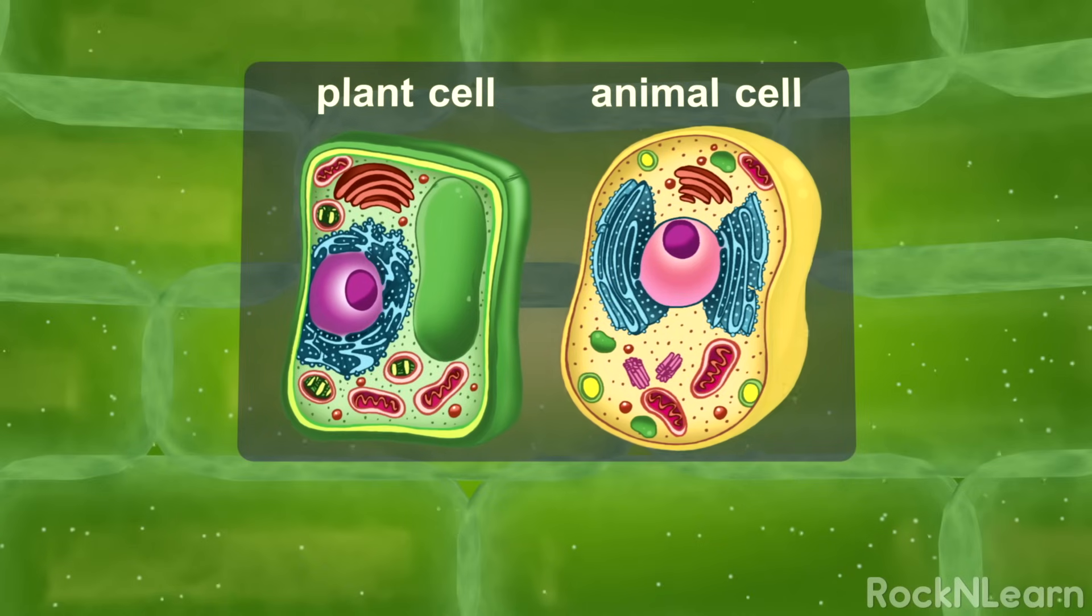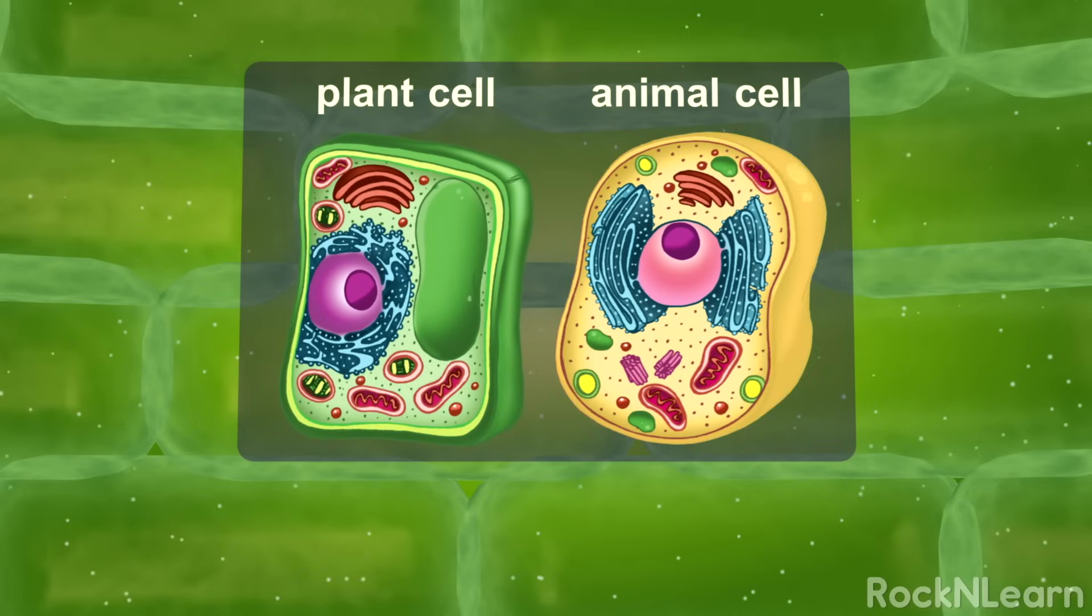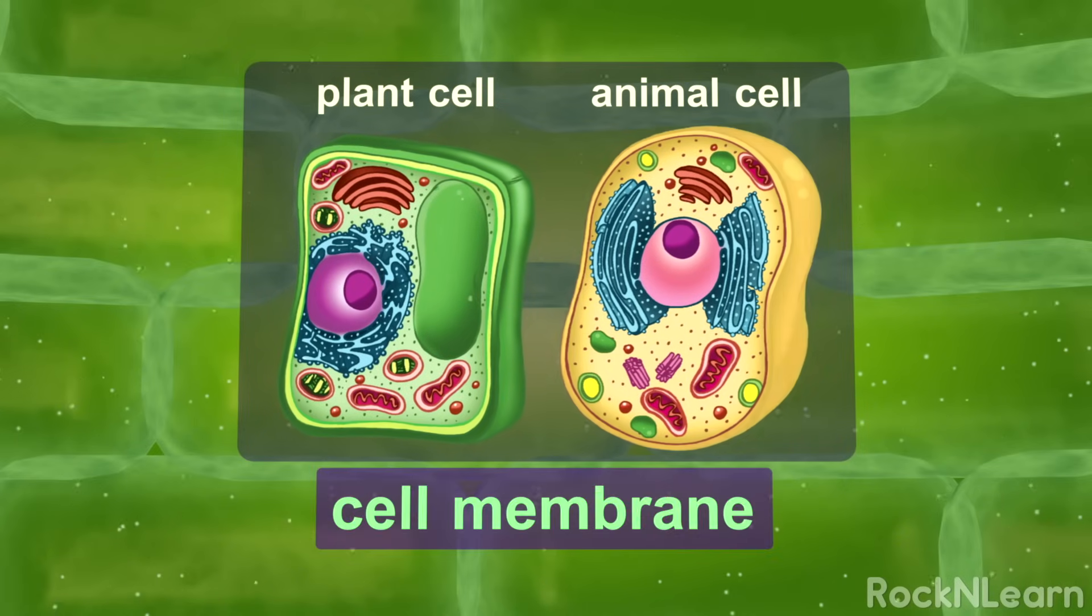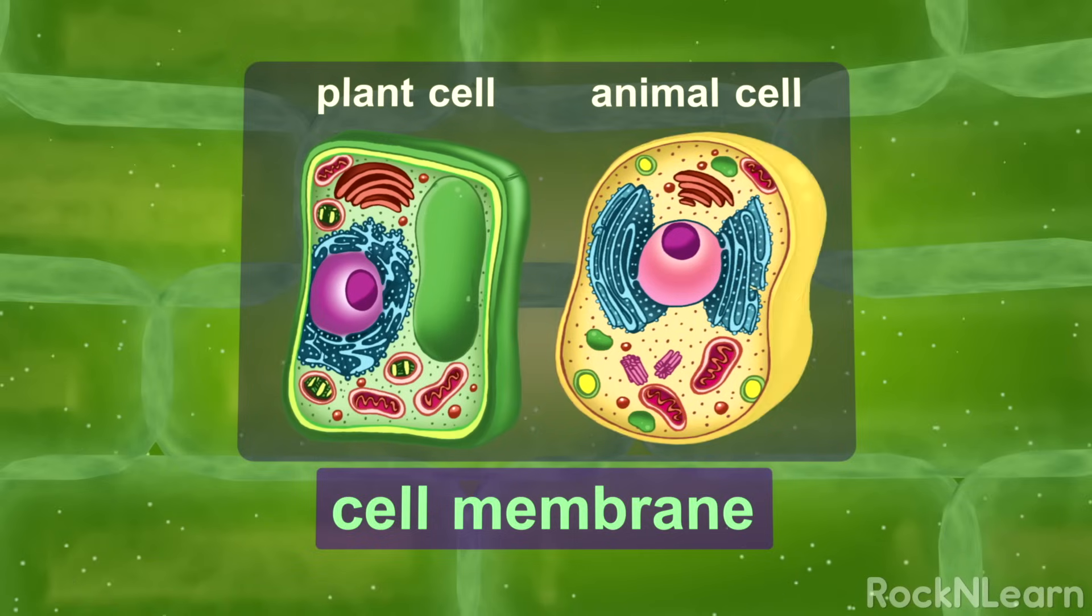Both plant and animal cells have a cell membrane surrounding the cell. It allows some things to come in and out of the cell.